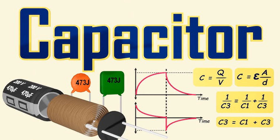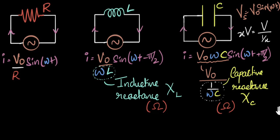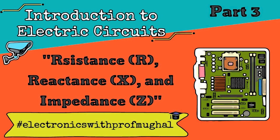Power distribution systems: in electrical power systems, impedance plays a significant role in determining the efficiency and stability of power distribution. Impedance matching and power factor correction techniques are used to minimize losses, improve voltage regulation, and enhance the overall efficiency of power transmission and distribution networks. Medical devices: impedance measurements are used in various medical devices and diagnostic tools, such as bioimpedance analyzers and impedance cardiography systems. These devices utilize impedance measurements to assess physiological parameters, monitor cardiac function, and diagnose medical conditions. Control systems: impedance control is employed in robotics and automation systems to regulate the interaction between robotic manipulators and their environment. By adjusting the impedance of the robot's actuators, it can safely and accurately interact with objects, adapt to changing environments, and collaborate with humans.